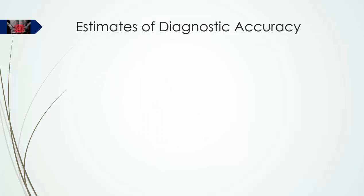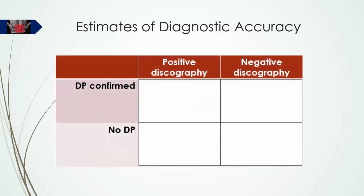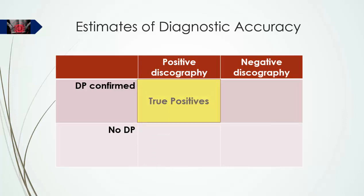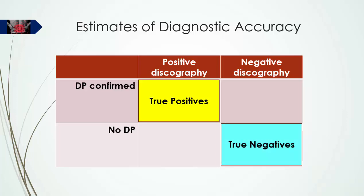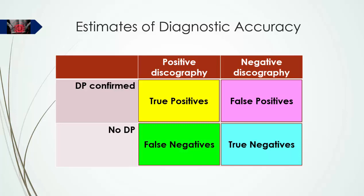Now we have data from which we may make estimates of diagnostic accuracy. We have patients who either have or do not have a directional preference, and these patients either do or do not have painful discs according to the reference standard of controlled discography. Data are entered into a 2x2 contingency table. The true positives have both positive discography and directional preference. The true negatives have negative discography and no directional preference. False positives have a directional preference but no discogenic pain, and false negatives have discogenic pain but no directional preference.